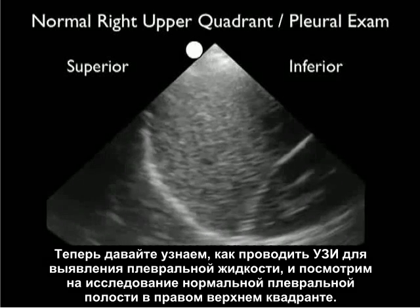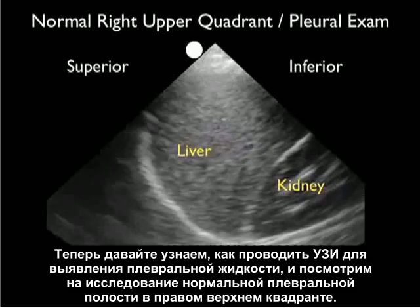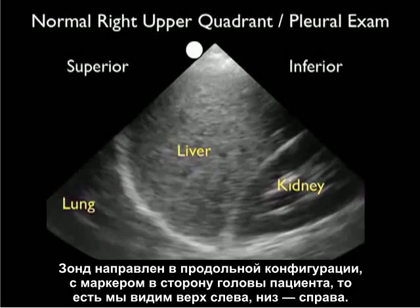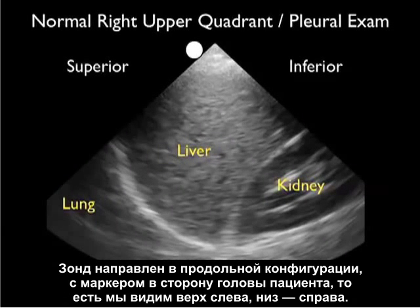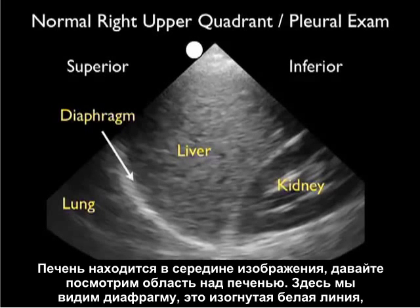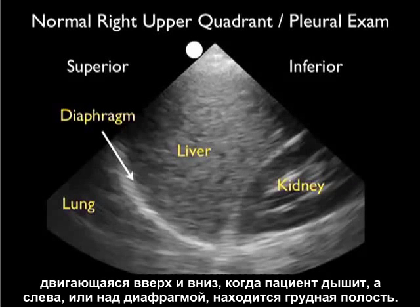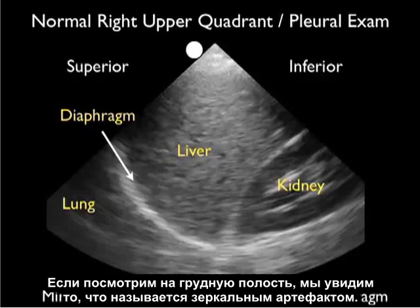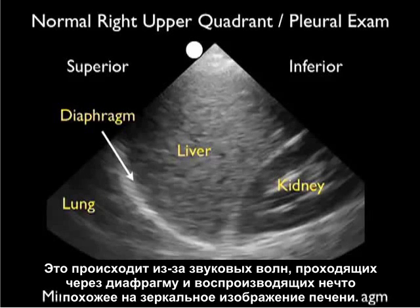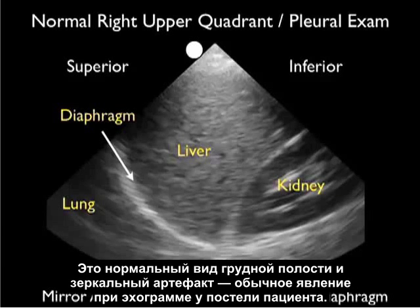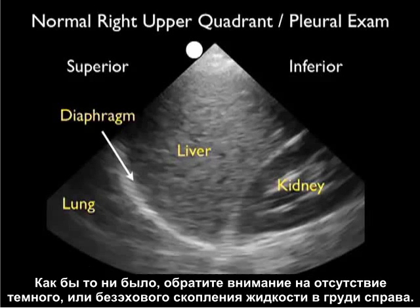Now that we know how to perform the ultrasound examination for pleural fluid, let's take a look at a normal right upper quadrant pleural examination. The probe is configured in a long axis orientation with the marker towards the patient's head, so we see superior to the left and inferior to the right. The liver is in the middle of the image. Above the liver we see the diaphragm — that curving white line moving up and down as the patient breathes — and superior to the diaphragm is the thoracic cavity. What we see there is something called mirror artifact, which occurs as a result of sound waves coming through the diaphragm and reproducing what looks like a mirror image of the liver within the chest. This is a normal appearance, and notice the absence of a dark or anechoic fluid collection within the right chest.